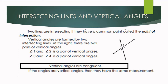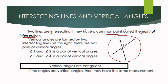Let us define intersecting lines and vertical angles. Two lines are intersecting if they have a common point, and this common point is called the point of intersection. When we say vertical angles, these are two non-adjacent angles formed by two intersecting lines. Non-adjacent means they are not beside each other. For example, angle 1 and angle 2 is a pair of vertical angles, and angle 3 and angle 4 is also a pair of vertical angles.